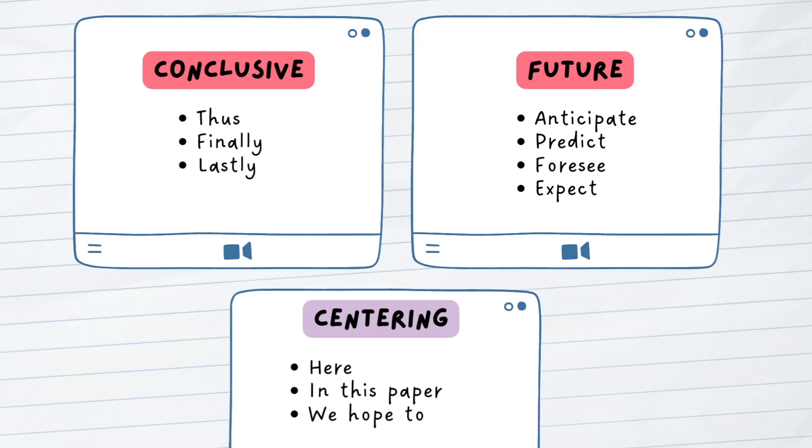Conversely, conclusive words such as thus, finally, and lastly actually tell us what the key conclusion or result of the study was. Future words like anticipate, predict, foresee, and expect can also be used when discussing results to help us understand the implications of such findings and what researchers down the line should focus on when conducting their own investigation.